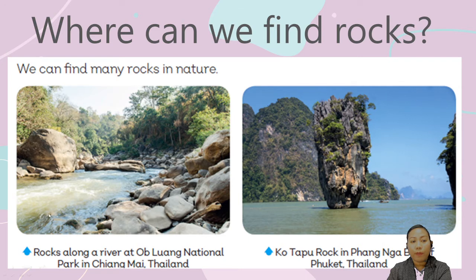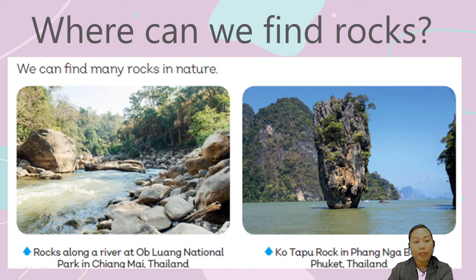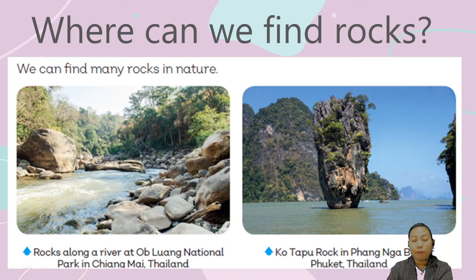Look — this is a river. These are rocks along a river in Chiang Mai, Thailand, at Oblong National Park. And here, this is a place in Phuket — this is a rock formation. We can find this at Koh Panga Bay, Koh Tapko Rock in Phang Nga Bay, Phuket.